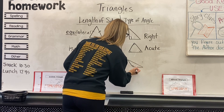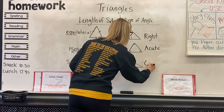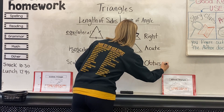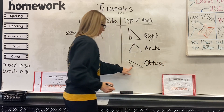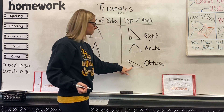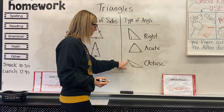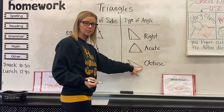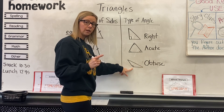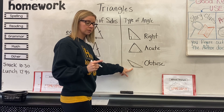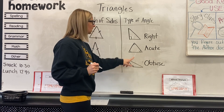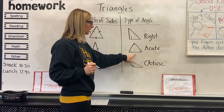And there's your obtuse angle — right there — and that makes it an obtuse triangle. So even though it does have two acute angles, as long as it has one obtuse angle, then it's considered an obtuse triangle.